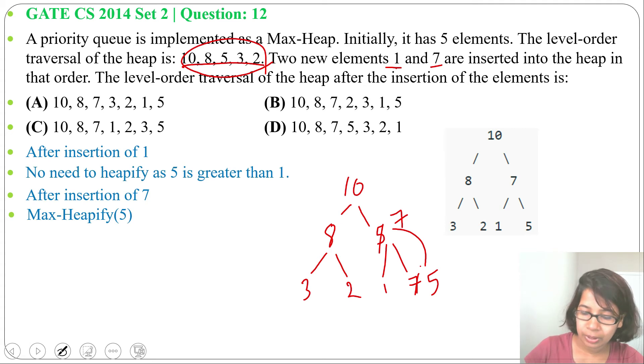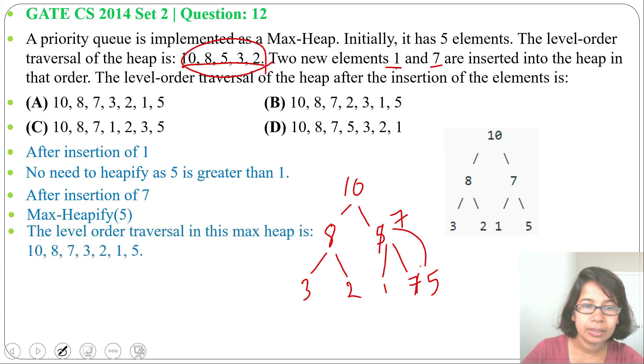So 10, 8, 7, 3, 2, 1, 5. Now check which option contains this. Option A contains this. So answer will be option A: 10, 8, 7, 3, 2, 1, 5 after insertion of 1 and 7 into this heap.